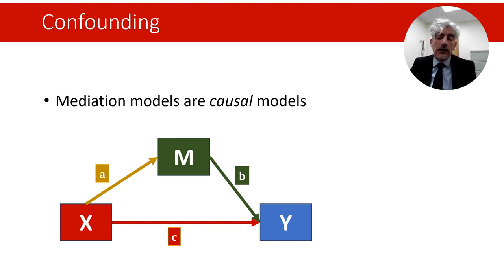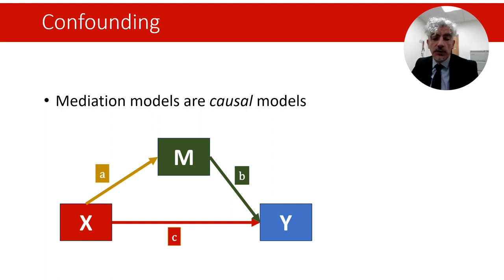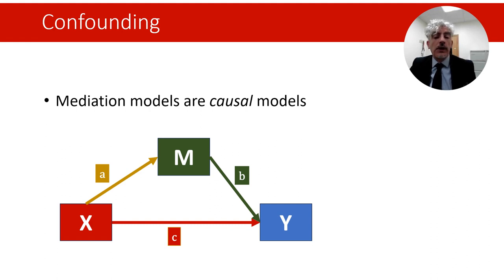If the predictor x is an experimental variable — for example a treatment that participants randomly receive — and participants who receive the treatment and those who don't are otherwise treated the same way, we can be confident the treatment is the only plausible cause for differences in outcomes. But often we cannot run experimental studies, and while the predictor can be randomly allocated, the mediators cannot. The association between the mediators and the outcome may be due to a third variable that influences both.